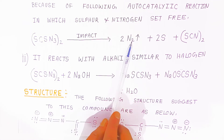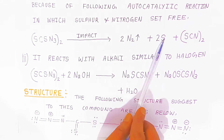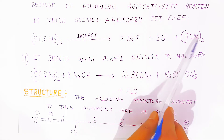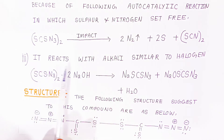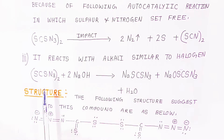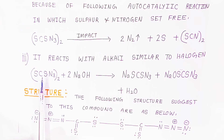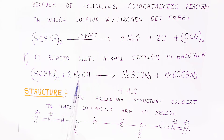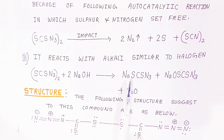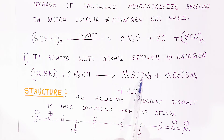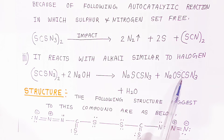It reacts with alkali similarly to halogens. When azido carbon disulfide reacts with NaOH (alkali), it gives the sodium salt of azido disulfide and the sodium salt of azido cyanate, plus water.